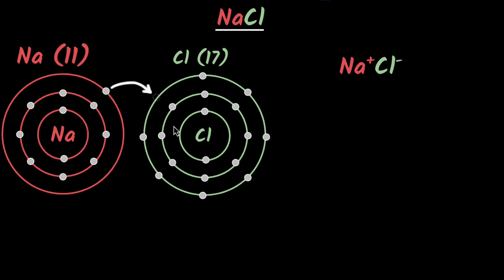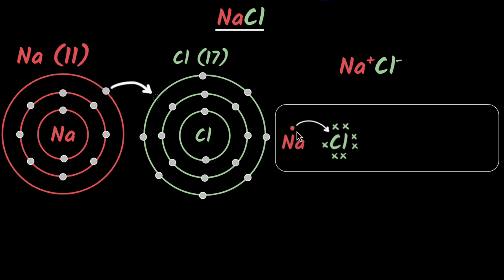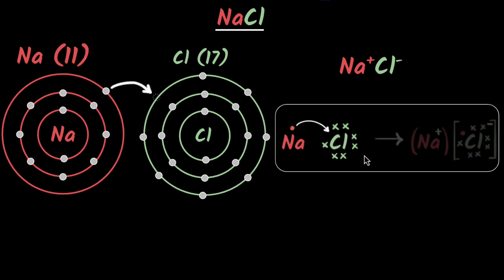Because drawing this in full is time-consuming, a faster way to represent it is using an electron dot structure. We show the valence electron of sodium and the seven valence electrons of chlorine, and we show the transfer from sodium to chlorine — using a dot for one and a cross for the other. Sodium becomes positively charged, chlorine gets the extra electron and becomes negatively charged. The positive species is shown in round brackets, the negative in square brackets, placed together to show they are bonded. This is how sodium chloride is formed.